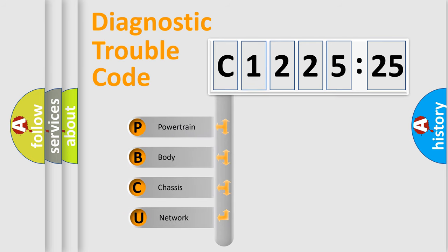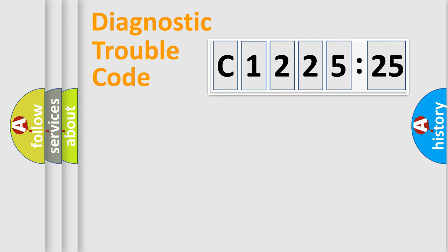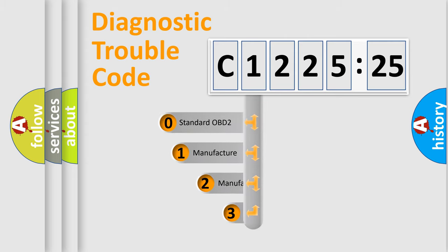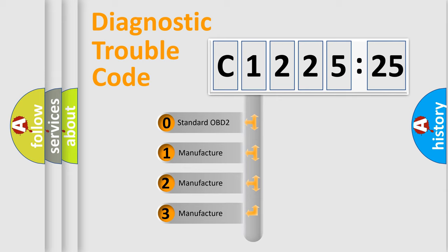First, let's look at the history of diagnostic fault code composition according to the OBD2 protocol, which is unified for all automakers since 2000. We divide the electric system of automobiles into four basic units: Powertrain, Body, Chassis, and Network. This distribution is defined in the first character code.